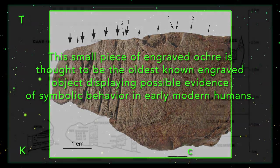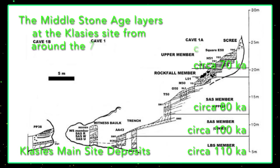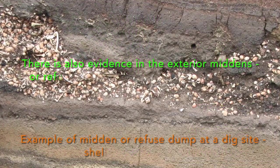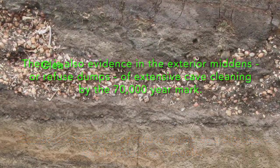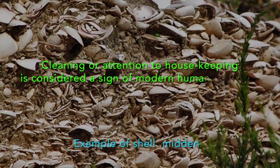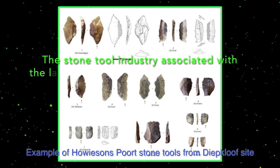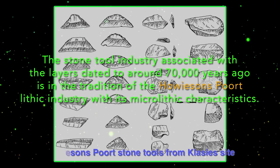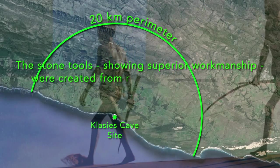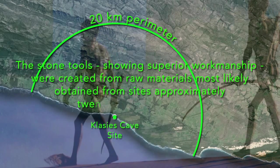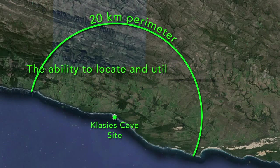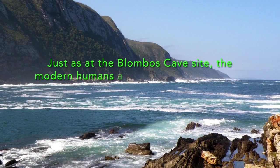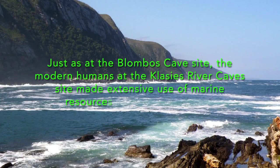This small piece of engraved ochre is thought to be the oldest known engraved object displaying possible evidence of symbolic behavior in early modern humans. The Middle Stone Age layers at the Klasies site from around the 70,000 year mark show significant changes from the earlier layers. There is also evidence in the exterior middens or refuse dumps of extensive cave cleaning by the 70,000 year mark. Cleaning or attention to housekeeping is considered a sign of modern human behavior. The stone tool industry associated with the layers dated to around 70,000 years ago is in the tradition of the Howison's Port lithic industry with its microlithic characteristics. The stone tools, showing superior workmanship, were created from raw materials most likely obtained from sites approximately 20 kilometers inland. The ability to locate and utilize raw resources from distant areas is thought to be another hallmark of modern human behavior. Just as at the Blombos Cave site, the modern humans at the Klasies River Cave site made extensive use of marine resources, especially shellfish.